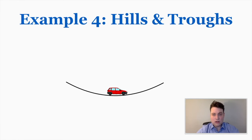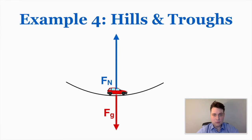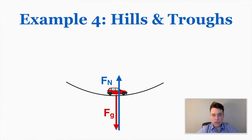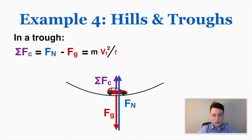In a trough at the bottom of the path, the normal force must be bigger than the force of gravity because the net force has to point toward the center of the circle, which is now upward. So the centripetal force equals normal force minus gravity, and that equals mv squared over r. You can use those equations to find additional information about the motion.